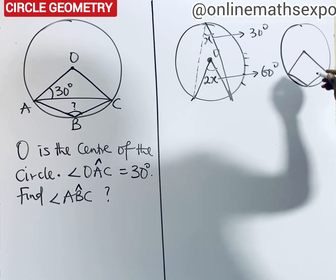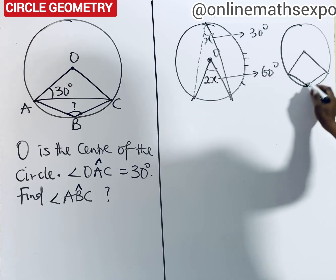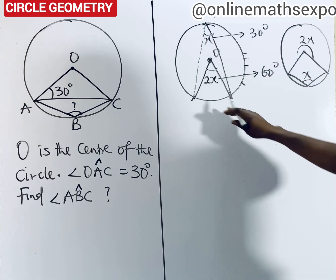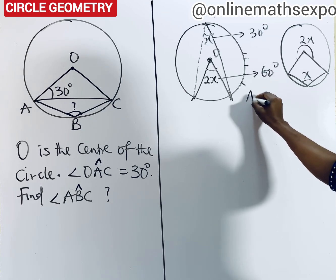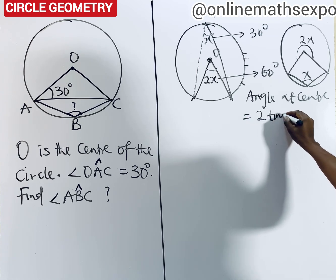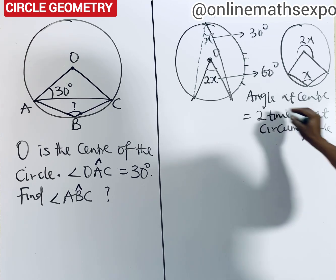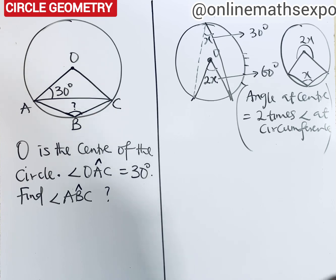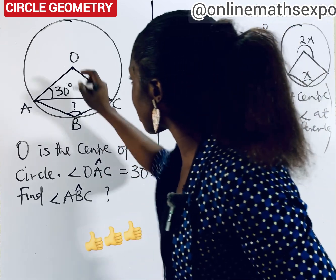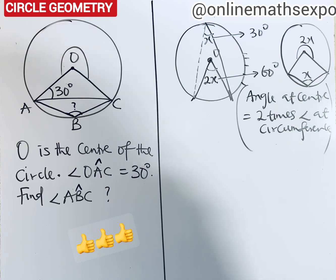Look at the part of the circumference where it makes another angle — no longer upward but downward. When the angle is formed at the downward part, if the angle at the circumference is x, then the angle at the center gives you 2x. This theorem is about the angle at center, which equals two times the angle at circumference. We are going to use this theorem to answer this question.